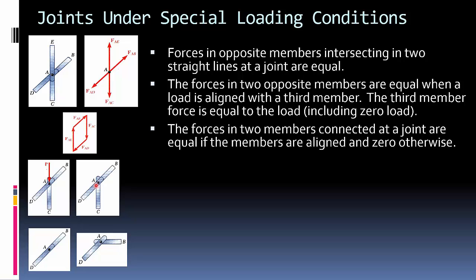The forces in two members connected to the joint are equal if the members are aligned and zero otherwise. So you have these two forces here. So the way I think, AD and AB are going to be equal. What about here?